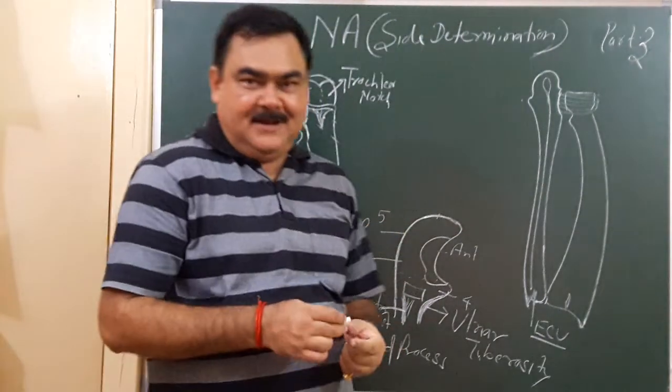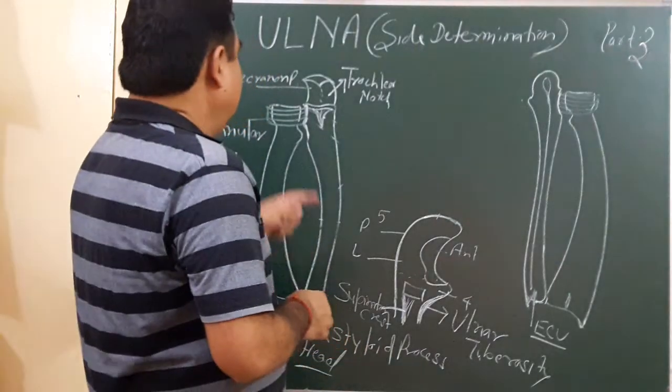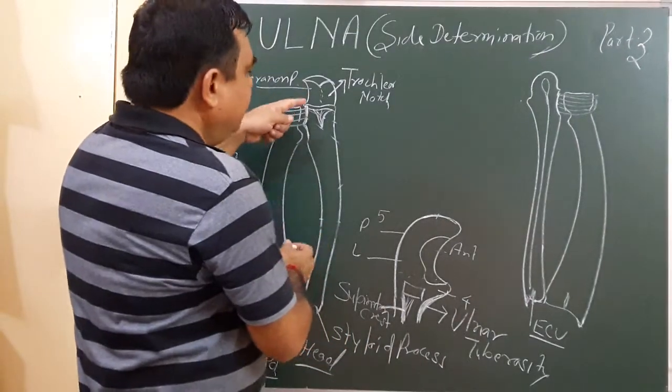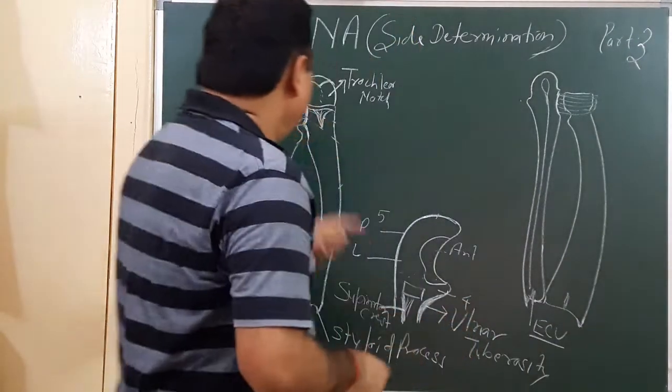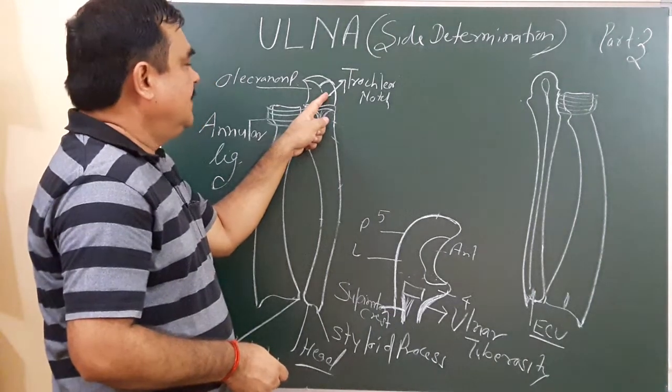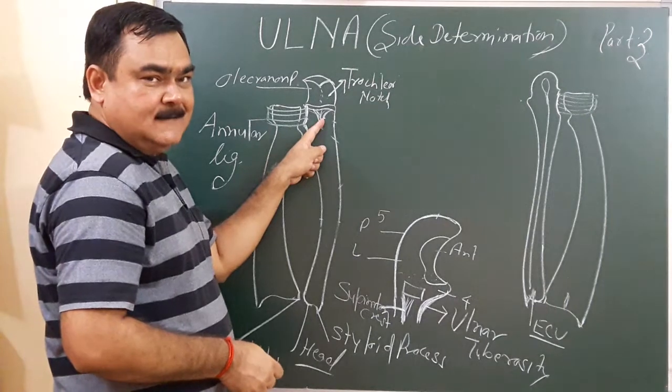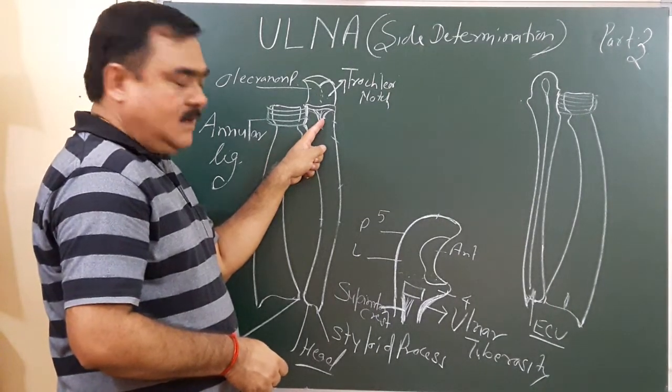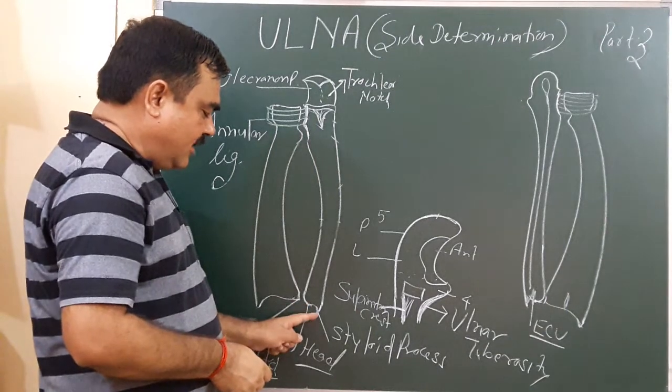Now, for side determination, the ulna can be determined by keeping three things in mind. First, its upper end has two processes: the olecranon process and coronoid process. The lower end has a head and styloid process.